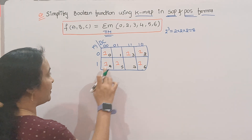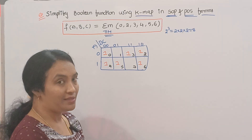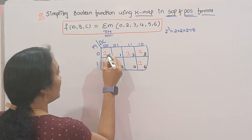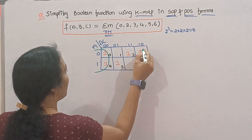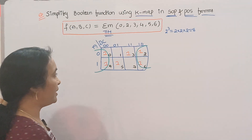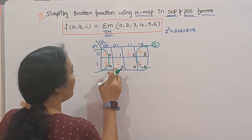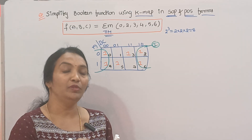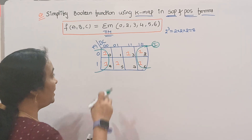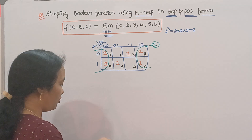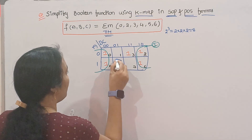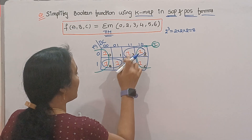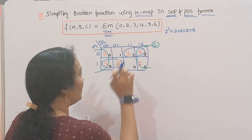Grouping: first we check the maximum number of ones. Is there eight ones possible here? No. Then there are four ones — this is the corner group. Then if you do group one, there will be individual ones. For four ones, you have to try for a group of two ones. If you do base, then try for three, and if single ones remain, you will get the result.